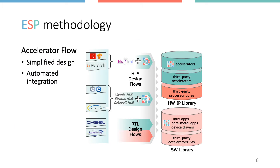The design methodology in ESP combines two main flows. The first is the accelerator flow — a collection of multiple flows accepting different levels of abstraction and different languages as inputs. Designers can choose between RTL, C, C++ through high-level synthesis, SystemC, or move to higher levels of abstraction for deep learning — for example, leveraging the HLS4ML open source tool to convert a Keras, TensorFlow, or PyTorch model into an HLS-ready specification.